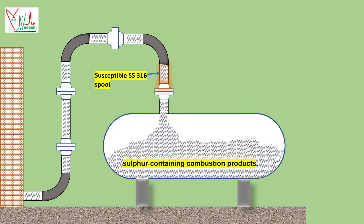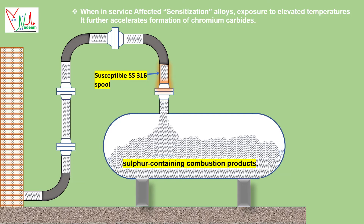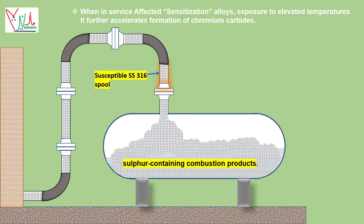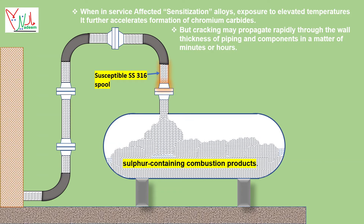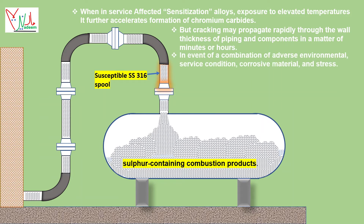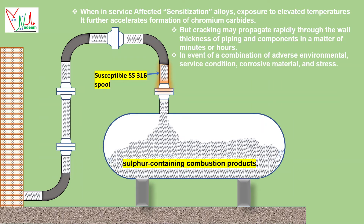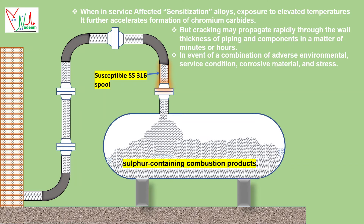When sensitized alloys are placed in service and exposed to elevated temperatures, this further accelerates the formation of chromium carbides. Cracking may then propagate rapidly through the wall thickness of piping and components in a matter of minutes or hours, in the event of a combination of adverse environmental service conditions, corrosive material, and stress.